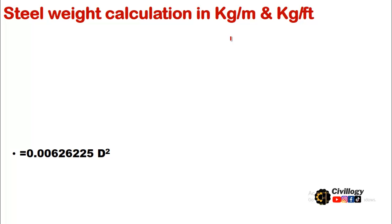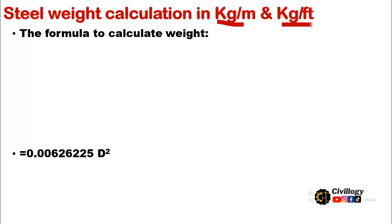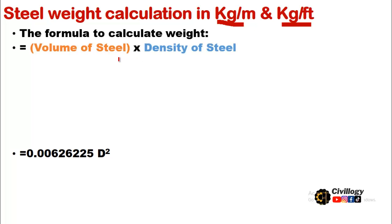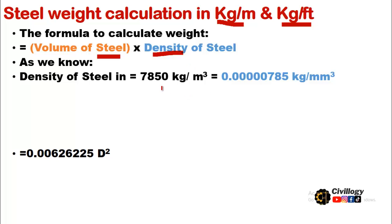Let us first derive the formula for the units kg per meter and kg per feet. The formula to calculate the weight is: volume of the steel multiplied by density of the steel. The density of steel is 7850 kg per cubic meter. If we convert it into millimeters, since the diameter of bars is given in millimeters...